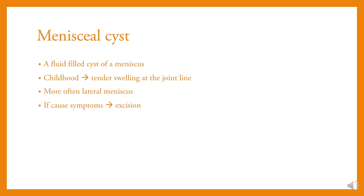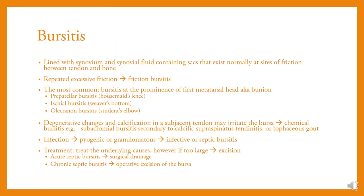Bursitis: bursae are synovium-lined, synovial-fluid-containing sacs that exist normally at sites of friction between tendon and bone. Repeated excessive friction causes friction bursitis, the most common being at the prominence of the first metatarsal head, also known as a bunion. Degenerative changes and calcification in the subjacent tendon may irritate the bursa — chemical bursitis; for example, subacromial bursitis secondary to calcific supraspinatus tendinitis, or tophaceous gout. Infection is another cause. Treatment: treat the underlying cause; however, if too large, excision.